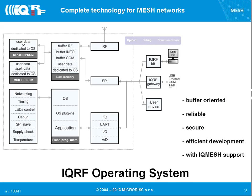Regarding memory: everything is based on buffer memory — there are four typical buffers: run memory, flash, internal EEPROM, and external EEPROM. If you receive something from RF, it goes to the RF buffer; if you want to save it to EEPROM, you copy it to the info buffer and send it there. If you want to send it to your computer, you copy it to the COM buffer and send it through SPI to your IQRF gateway.